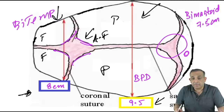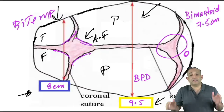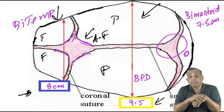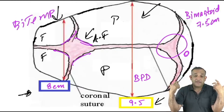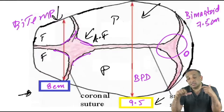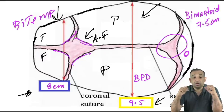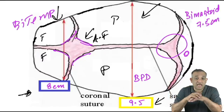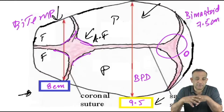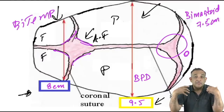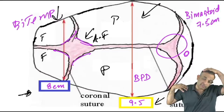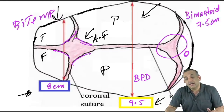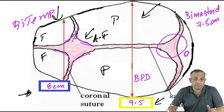The bi-mastoid diameter is 7.5 centimeters and bi-temporal is 8. The broadest part of the baby is always the bi-parietal diameter — don't say shoulders. In a fetus, the broadest part is the bi-parietal diameter. Sometimes in babies of diabetic mothers with high sugar, shoulders can be quite big, leading to shoulder dystocia when the head delivers but the shoulder is stuck. But that is not very common.